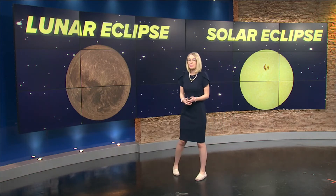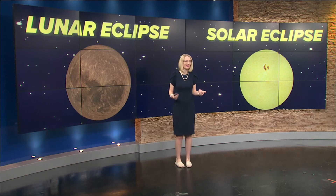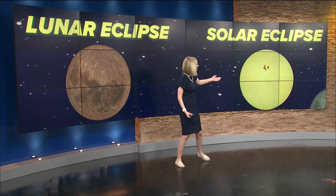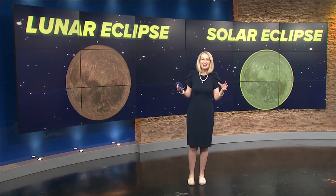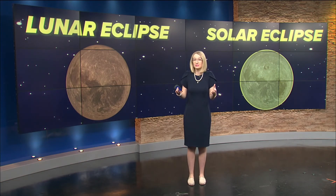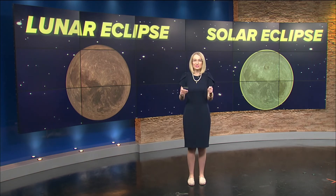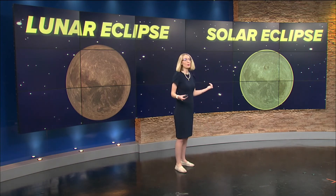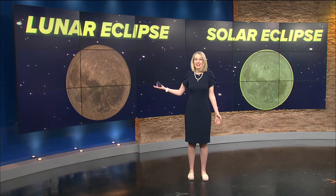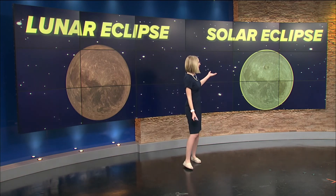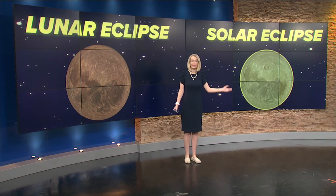In a solar eclipse, what it looks like to us here on earth is you have the sun, but then you have the moon moving in and blocking the sun itself. At times during totality, or that complete darkness, you can take those safety glasses off, but you are going to need them as that moon is moving through. Another difference between the two is that a lunar eclipse has to happen when we're in a full moon phase, but a solar eclipse requires the moon to be in the new moon phase.